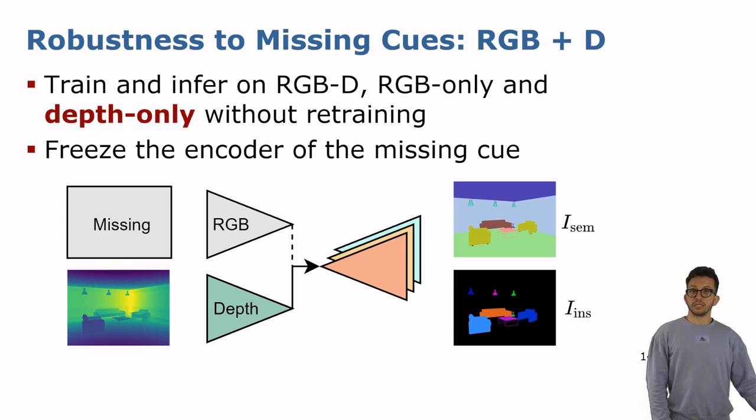Similarly, we can freeze the RGB encoder and operate with depth only, again at both training and inference time, and in practice this is useful if the robot navigates a dark environment where the RGB is unreliable.